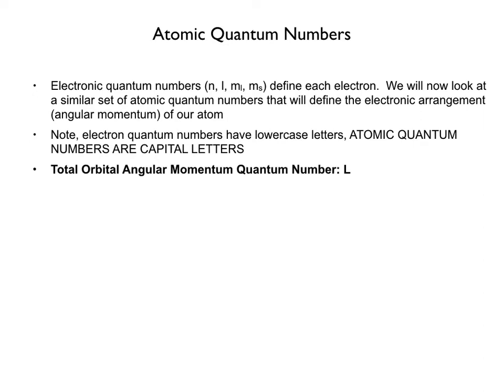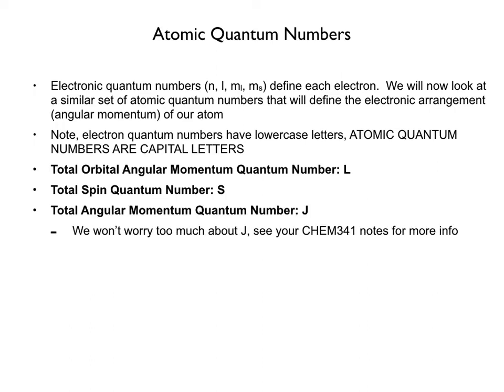The atomic quantum numbers are: capital L, the total orbital angular momentum quantum number; capital S, the total spin quantum number; and capital J, the total angular momentum quantum number. We won't do too much with J, but you can refer to your physical chemistry notes for more information.